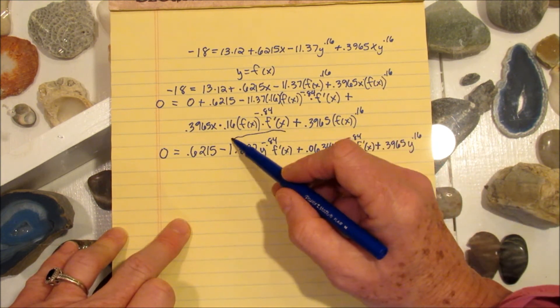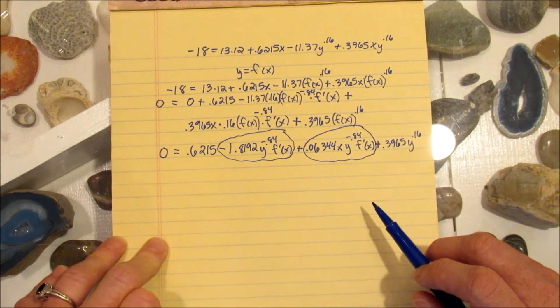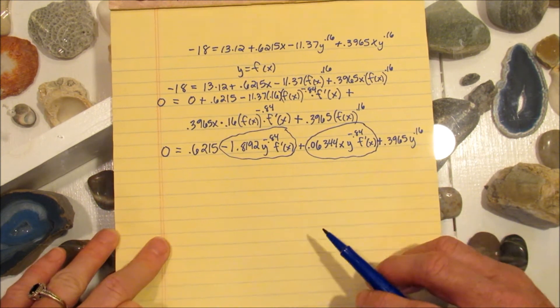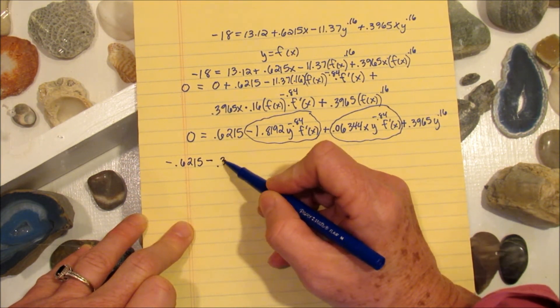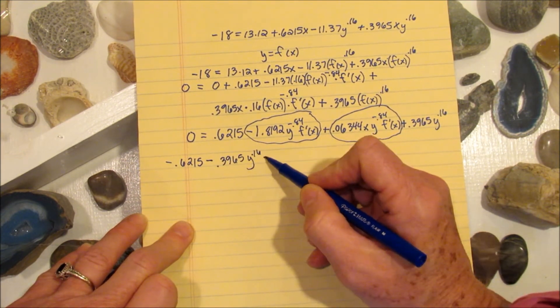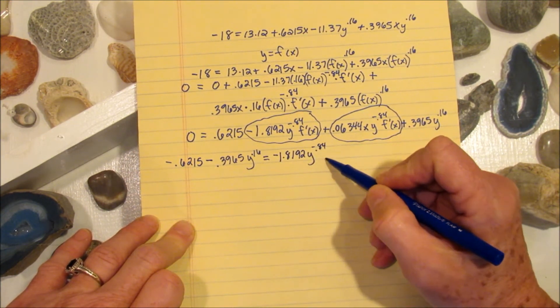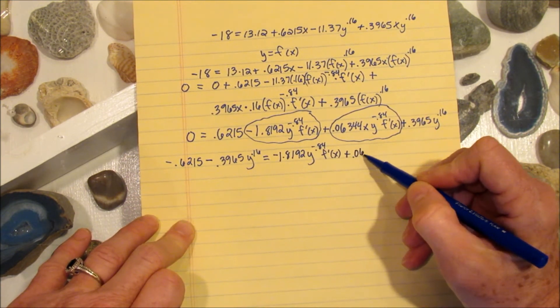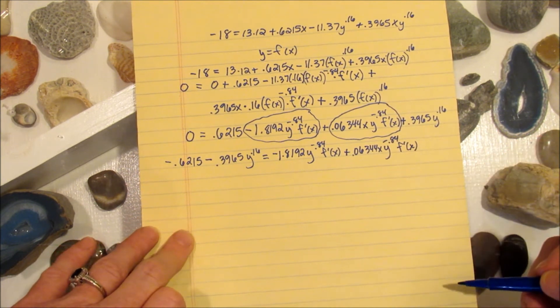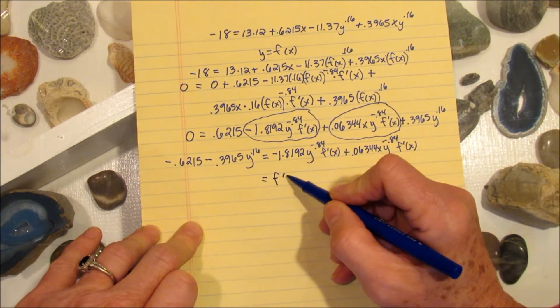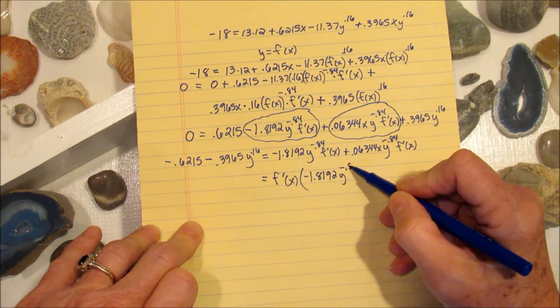So we are trying to solve for f prime, so you want to identify all the terms that have f prime in it. That's these two terms. Any term that does not have f prime, we will move to the other side. So negative 0.6215 minus 0.3965y to the 0.16 is equal to negative 1.8192y to the negative 0.84 f prime of x plus 0.06344x y to the negative 0.84 f prime of x. We did all that so that we could factor out that f prime, and once I get f prime factored out, I will be able to solve for it.